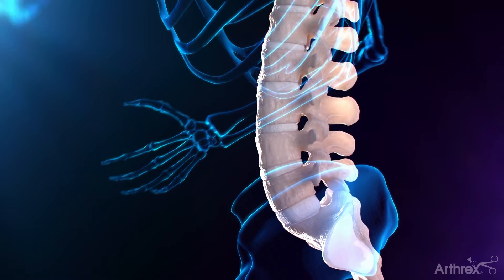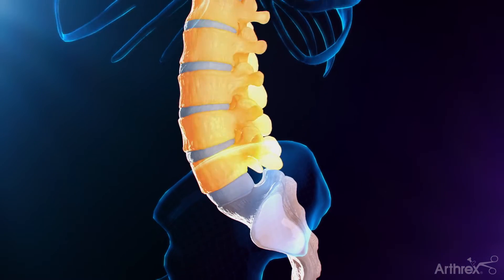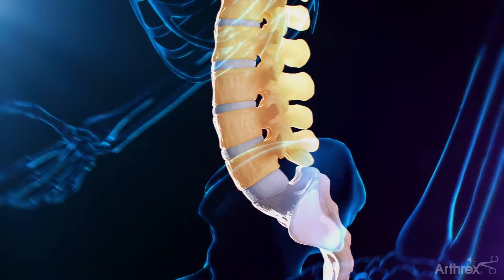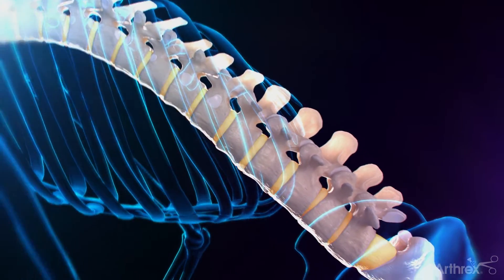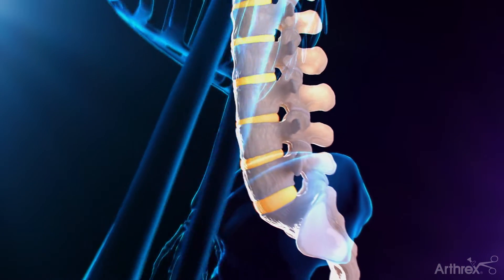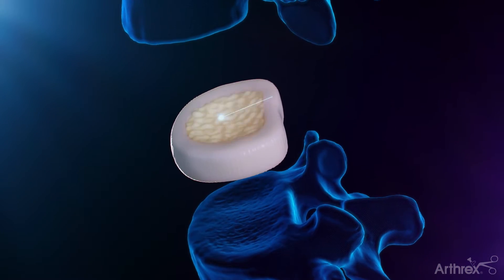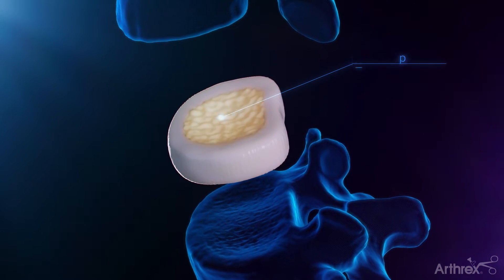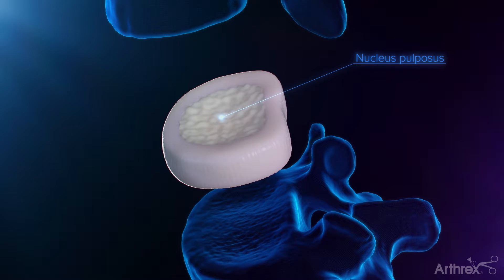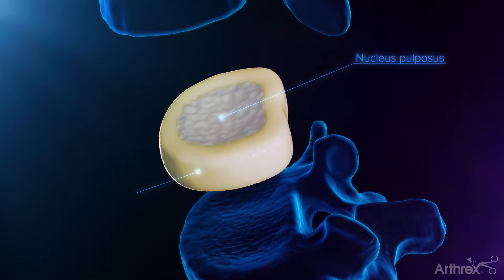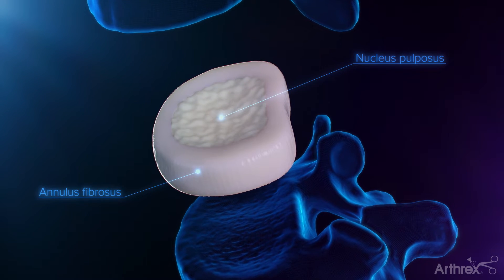These segments are called vertebrae and are separated by intervertebral discs that act as shock absorbers. These discs are made up of an inner soft gelatinous core called the nucleus pulposus and an outer fibrous layer called the annulus fibrosus.